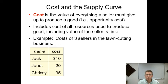So the cost of all resources used to produce a product, including the value of a seller's time. So this example: there's three people who sell their services in the lawn cutting business, and this is really their minimum willingness to accept to take a job. You have one person who only needs ten dollars. Their time isn't very valuable.